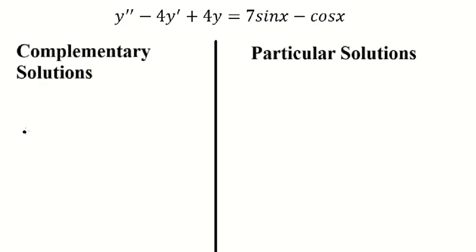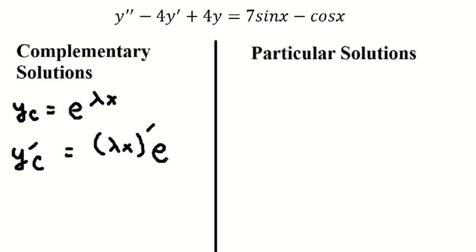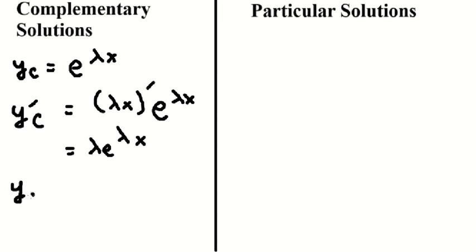For the first one, I will work on yc. That is about e to the power of λx. We need to do the first derivative of this one. The first derivative gives us λ times e to the power of λx, so we get λ. Now, going to the second derivative of yc, we get λ² times e to the power of λx.